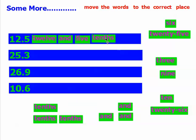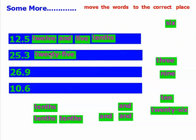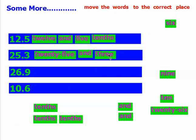Let's do one more. We say the whole number first: 25. We've got a decimal, so we always represent that by saying 'and.' So: 25 and 3 tenths. Say the number first and then the place value.